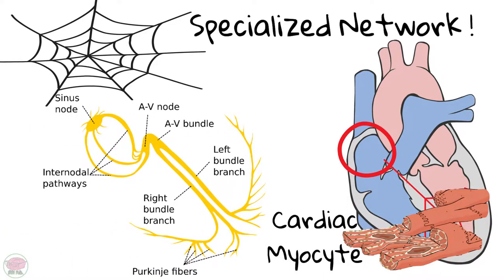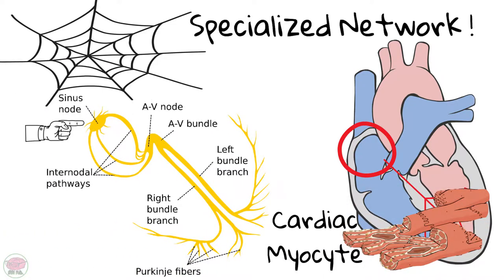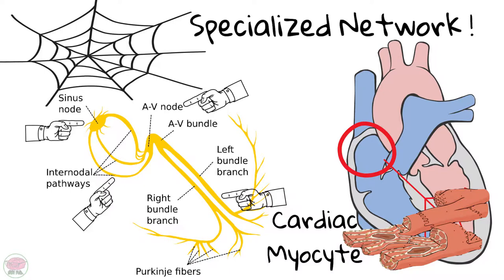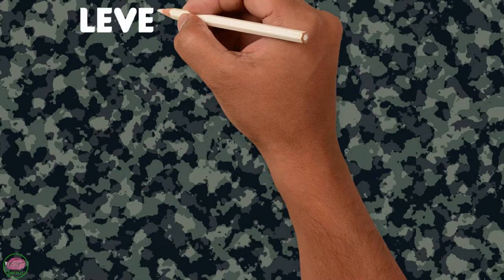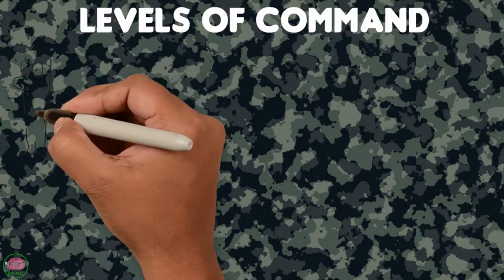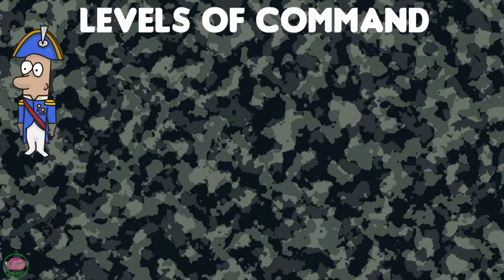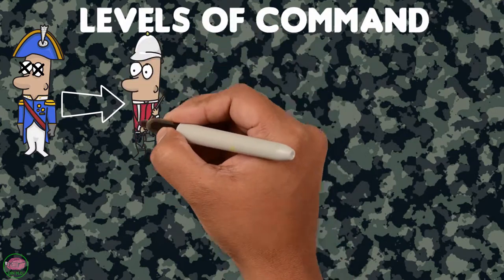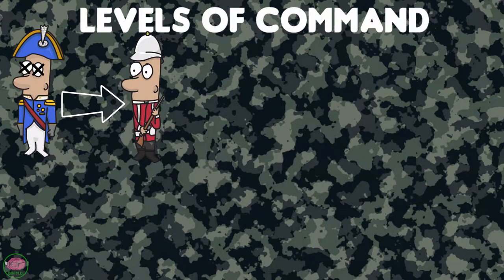These structures are: the sinoatrial node, the internodal pathways, the atrioventricular node, the atrioventricular bundle also called the bundle of His, and finally the Purkinje network. Picture all these structures as being part of the military — they have levels of command, meaning the one with the highest level is in charge, and if that person is killed in action, the next in the chain of command takes over. The conduction system works the same way.